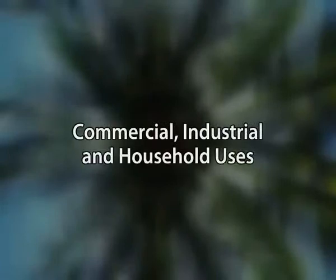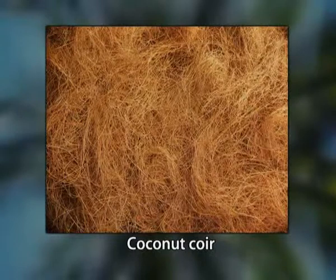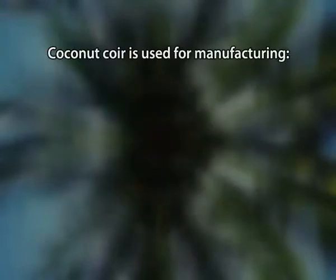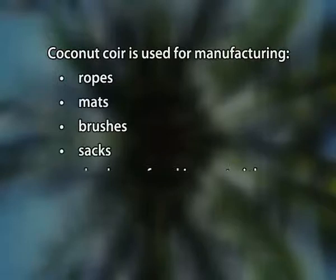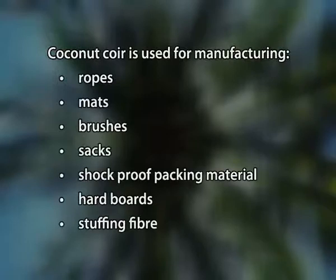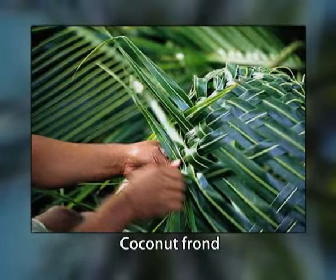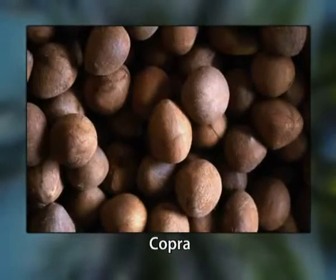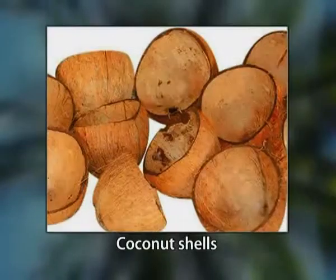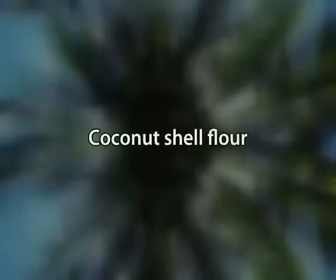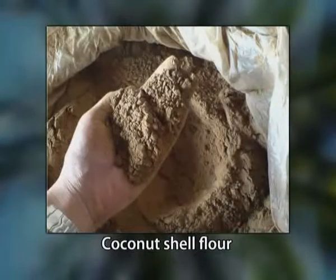Now the commercial, industrial and household uses. First, coir or coconut fiber is obtained from the husk of the coconut. They are used for manufacturing ropes, mats, brushes, sacks, shock-proof packing material for hardwoods and as stuffing fiber. Second, coconut fronds: the stiff mid-rib of coconut leaves are used for making brooms, baskets, mats and for roofing thatch. Third, copra: copra is the dried meat of the seed and after processing it produces coconut oil and coconut meal. Fourth, husks and shells can be used for fuel and are a source of charcoal. Fifth, coconut trunks are used for building small bridges and for house construction. Sixth, coconut shell flour is extensively used as a compound filler for synthetic resin use.